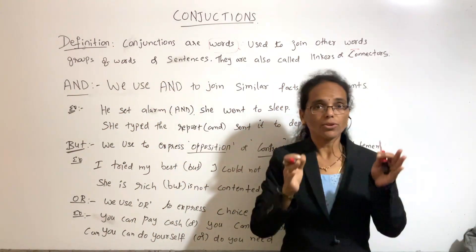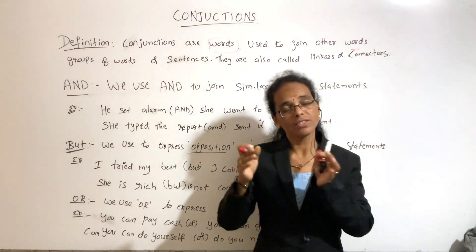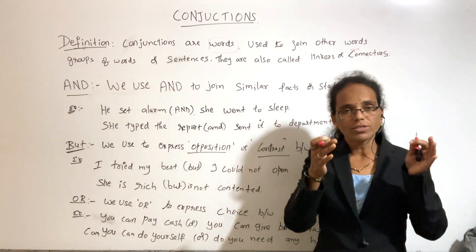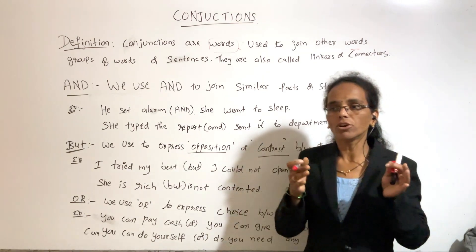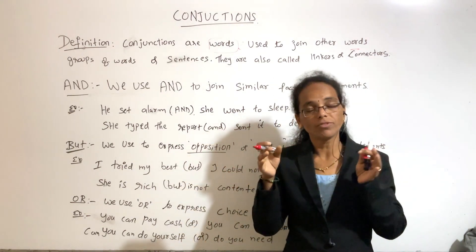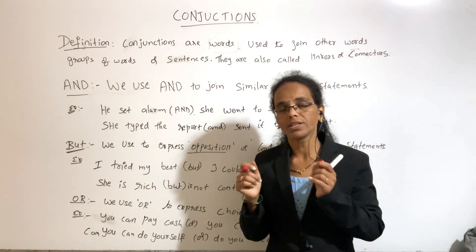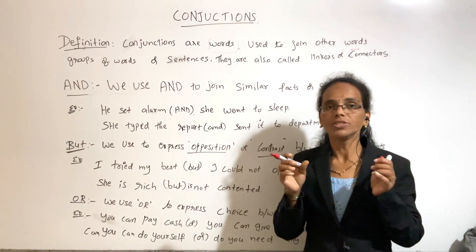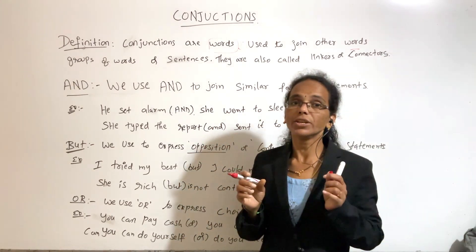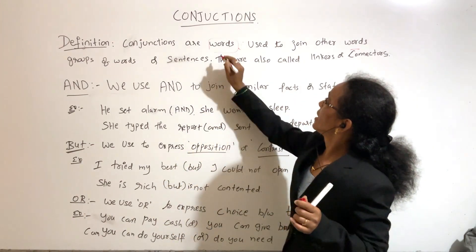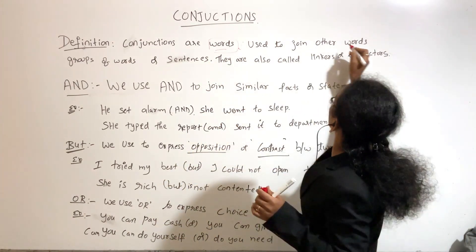Conjunctions can also join sentences. We use two sentences, but we use a word or a group of words as the conjunction to connect them. It means you join the words using a conjunction.